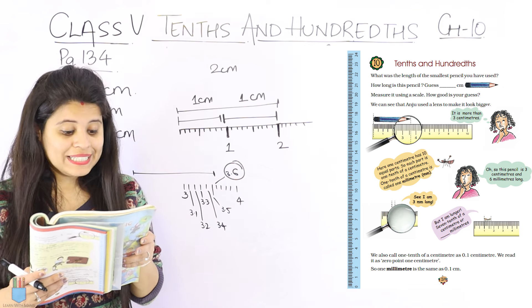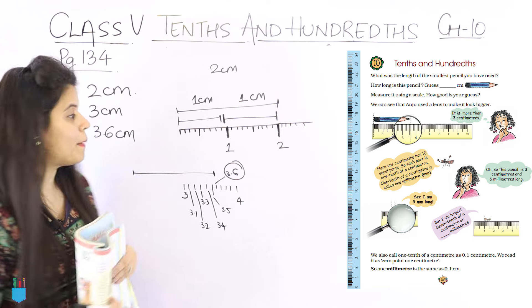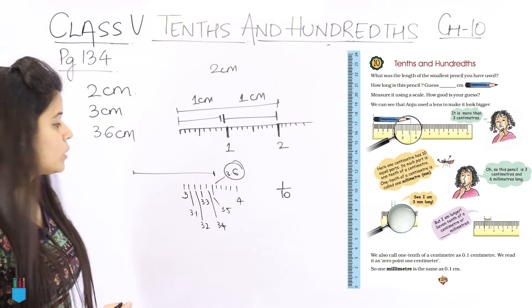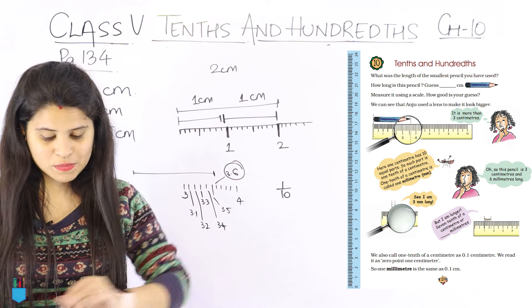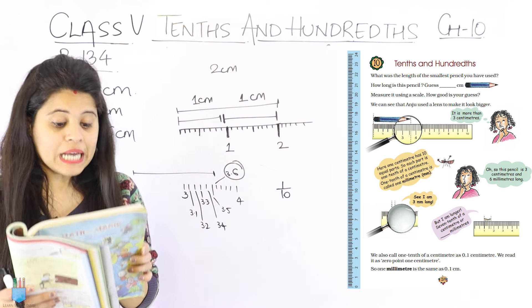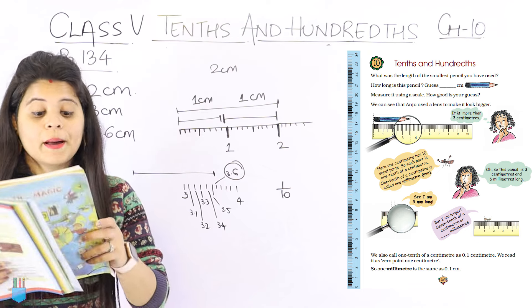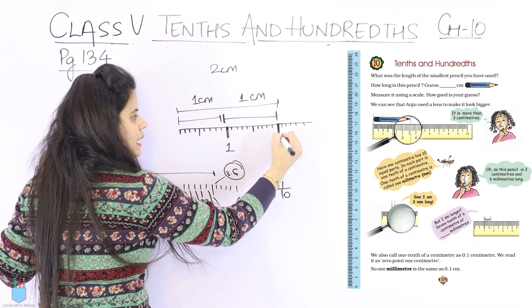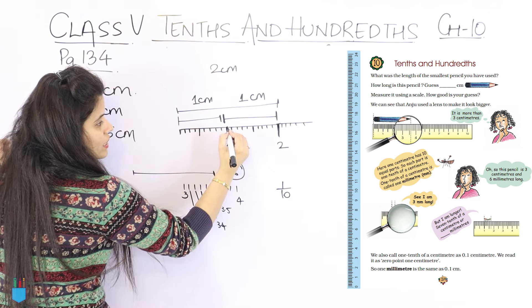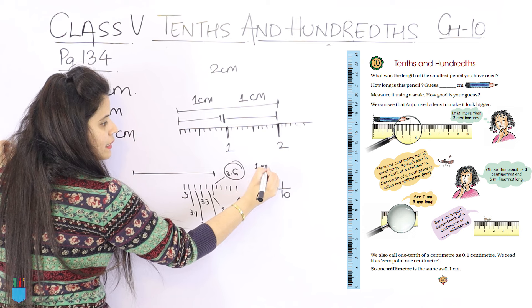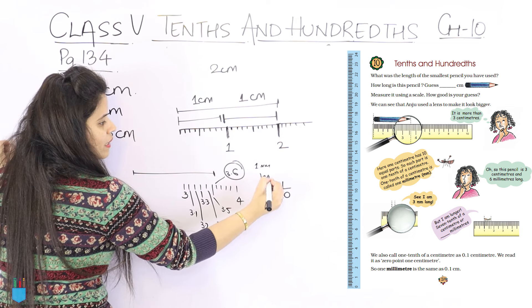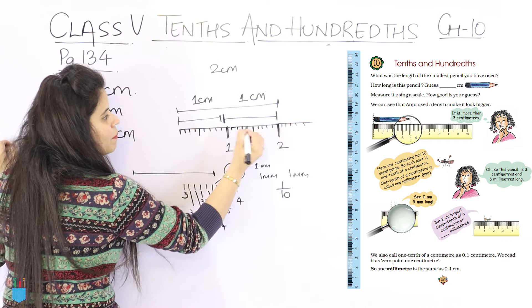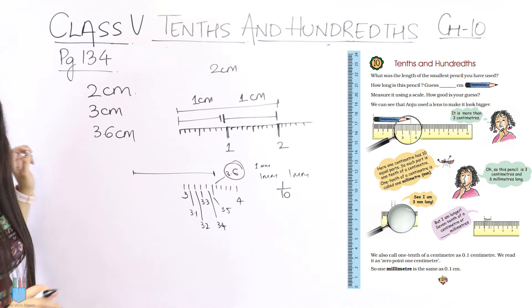Each part is 1/10 of a centimeter. And 1/10 of a centimeter is called 1 millimeter. So the gap between each small line is 1 millimeter.